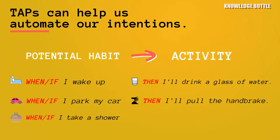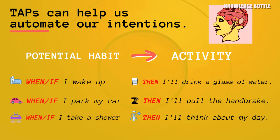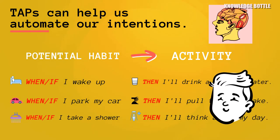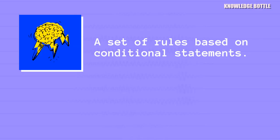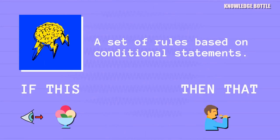When I take a shower, I'll think about the next steps of my day. You can use a TAP to create habits and have them running inside your brain's operating system's background without the need for conscious thinking. And I know that conscious thinking is still a debatable topic, but bear with me for a second. Your brain will essentially have a set of rules based on conditional statements — if-this-then-that.